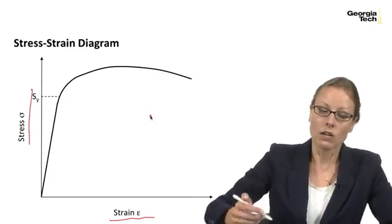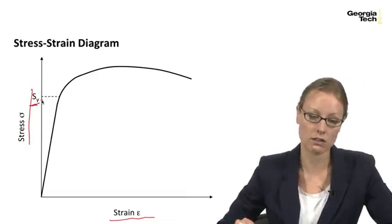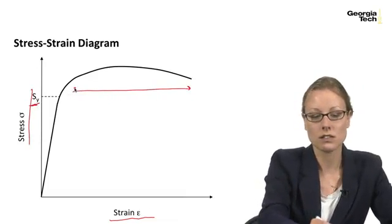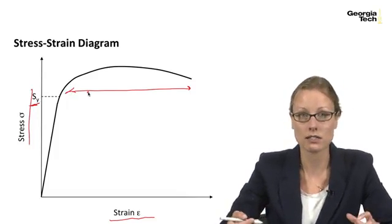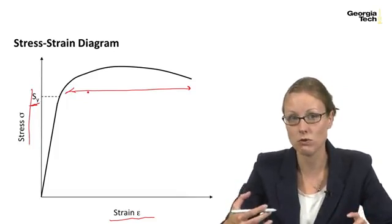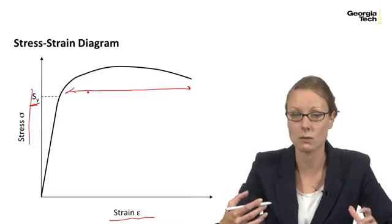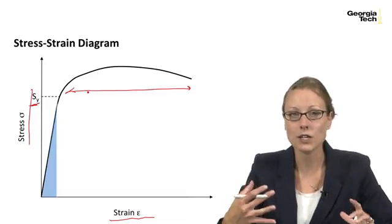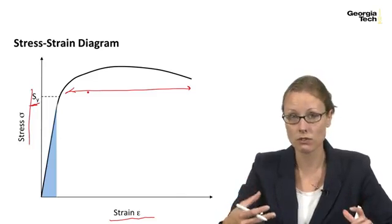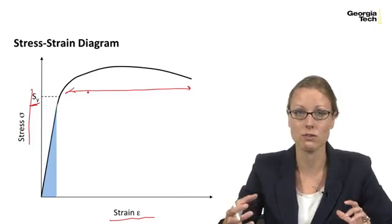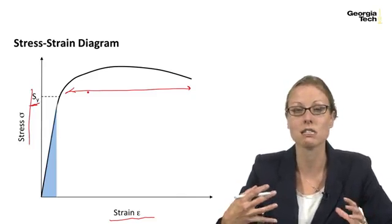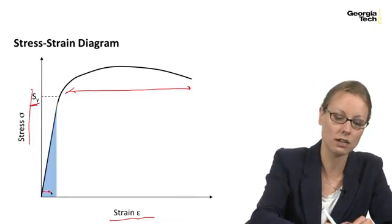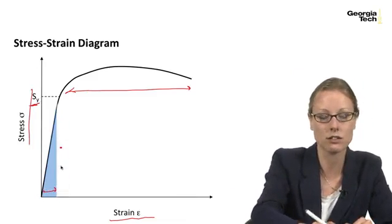We also have the yield strength of the material, and past the yield strength in this region right here, this is the plastic region where you'll get plastic deformation or permanent set when you remove the load. So when you remove the load from the object, the object will be permanently deformed in some way. Whereas in here we have the linear elastic region where you can remove the load and the object will go right back to the configuration it was in the beginning. So it's not permanently deforming or experiencing any permanent set. And this is typically the area we'll be running our analysis in, this linear elastic region.